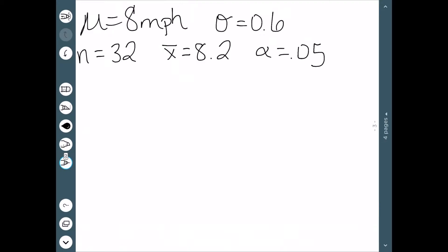This tells me that my null hypothesis is going to be equal to 8. My alternative is just going to be not equal to 8. So we have a two-tailed test.